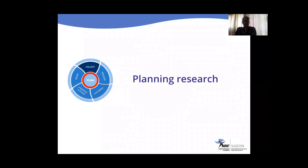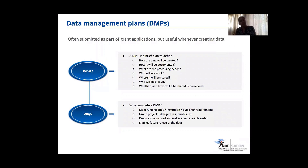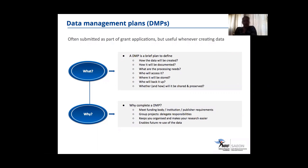Firstly, you need to plan your research. For data, you should put together something called a data management plan, or DMP. These are often submitted as part of grant applications, but they are very useful whenever you are creating data. A DMP is a brief plan that outlines the practices for collecting, organizing, storing and backing up your data, as well as any processing needs. It also allows you to critically review your project and develop a suitable plan of action. A DMP is often required by a funding body, institution, or publishers. For group projects, a DMP can help to delegate responsibilities, keeps you organized, and enables future reuse of your data.